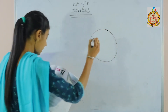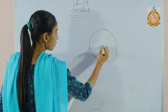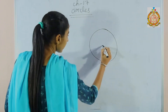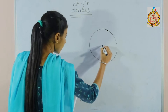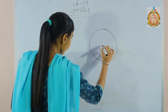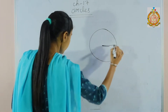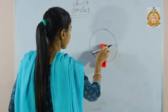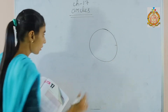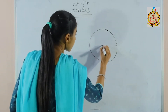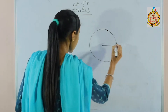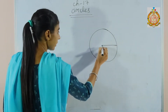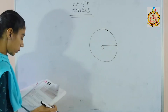A circle is a set of points which moves in a plane in such a way that its distance from a fixed point is always constant. Their distance is always constant from the fixed point. This fixed point is the center of the circle — suppose the center is called O.